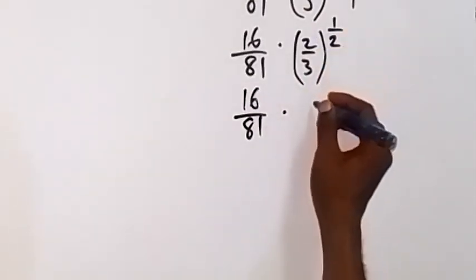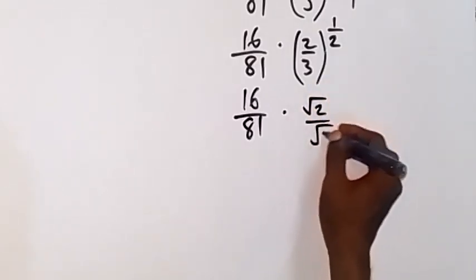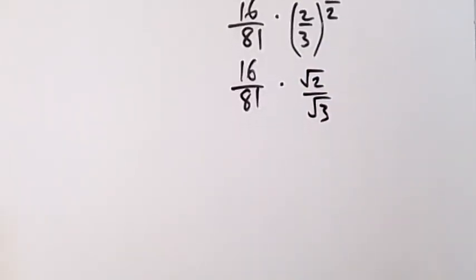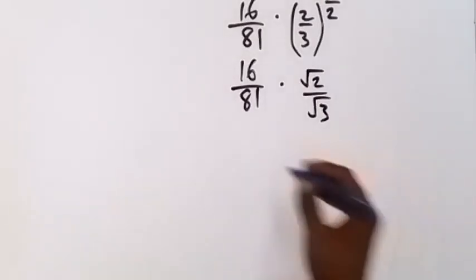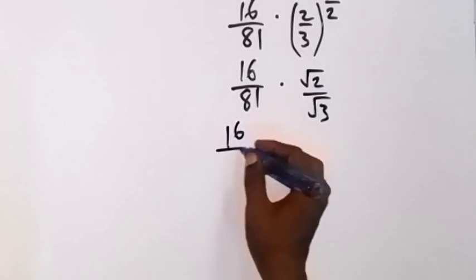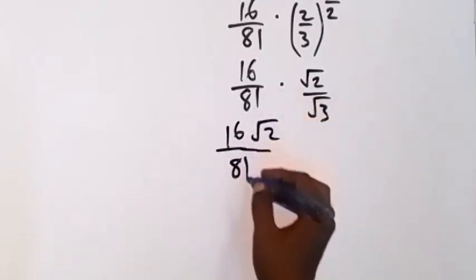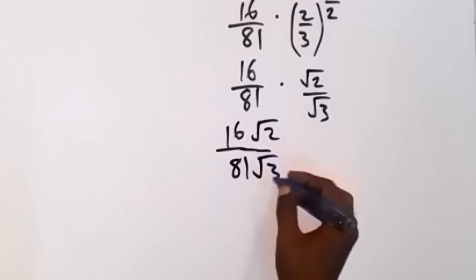And same thing as splitting it as square root of 2 over square root of 3. Then what this one gives us is simply 16 root 2, now by the time we multiply over 81 multiplied by root 3.